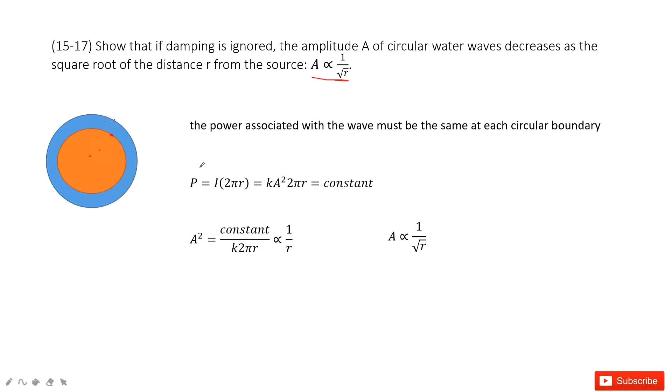So that makes the power equal, because the energy is power times t. So power is I times 2πr. The distance for this circle is 2πr.